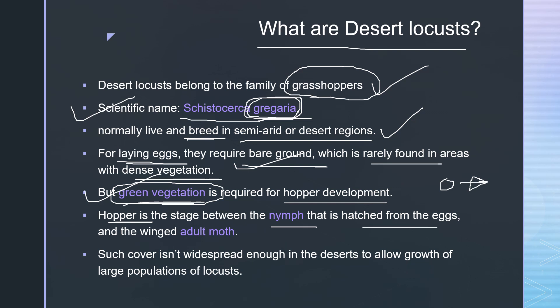A nymph hatches from the egg, and the final adult moth has wings. The stage between the egg and the adult is called the hopper. So desert locusts in this intermediate stage are referred to as immature hoppers.